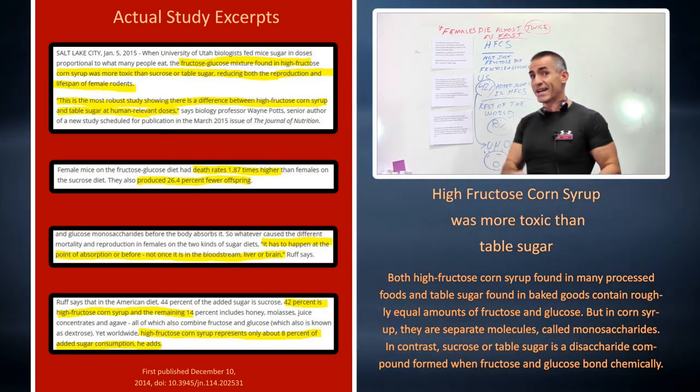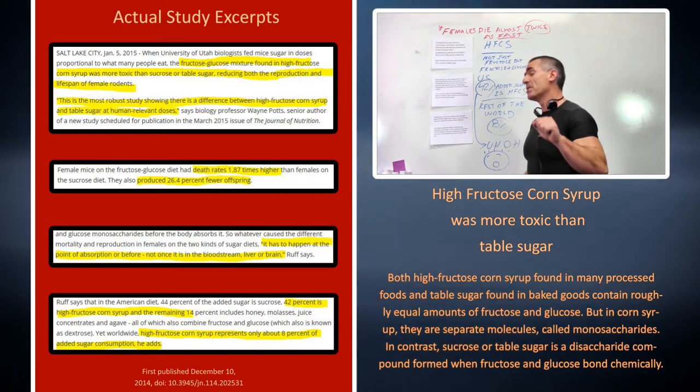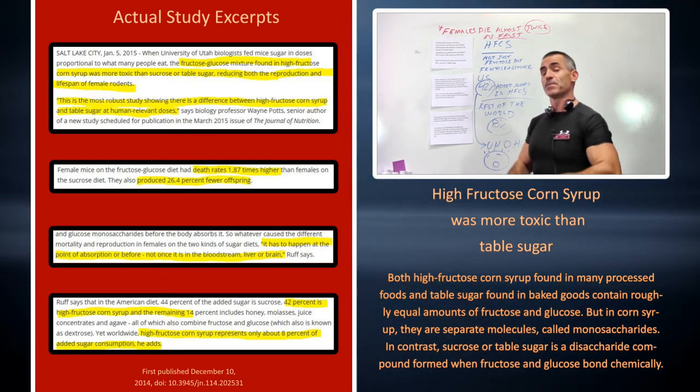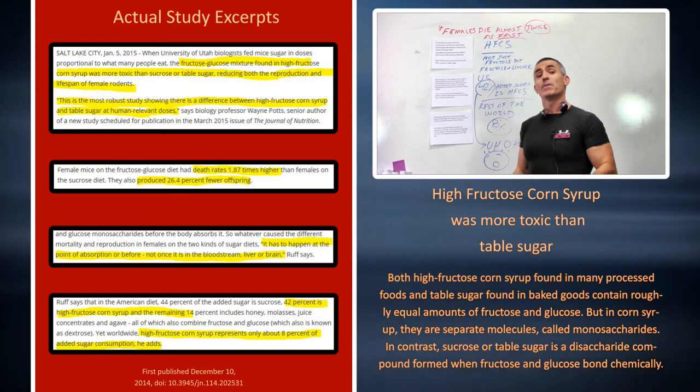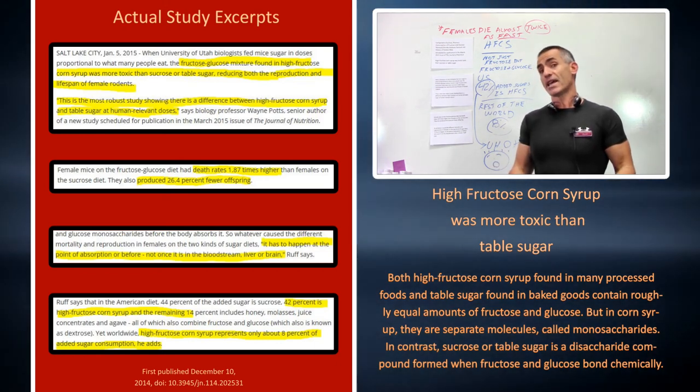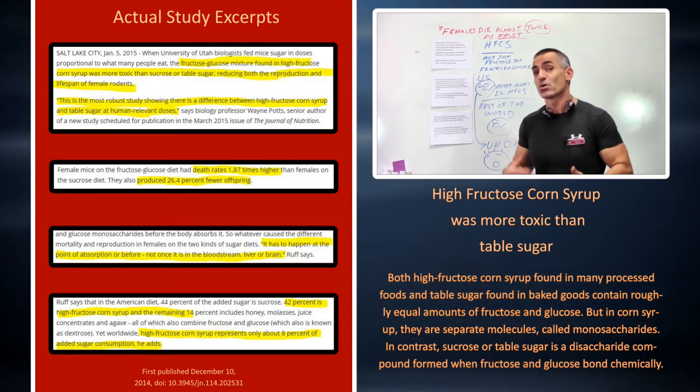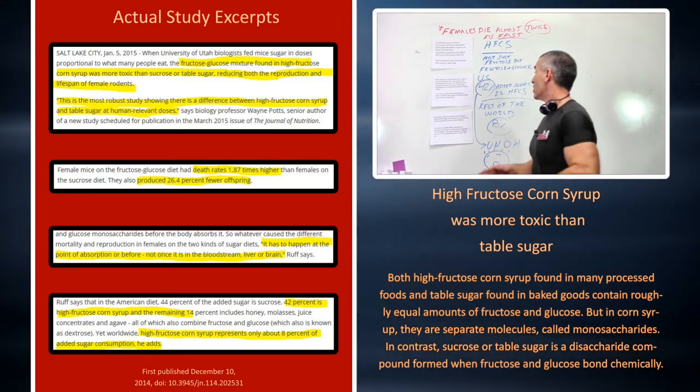What I say is the typical U.S. diet is important because out of most of our added sugars, 44% is table sugar but 42% of our added sugars is actually high fructose corn syrup in the United States. The rest of the world: 8%. U.S.: 42%.